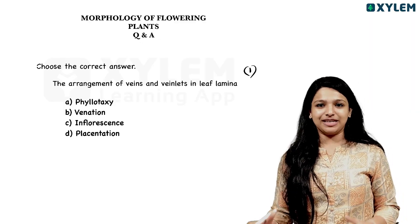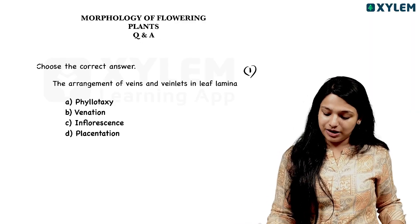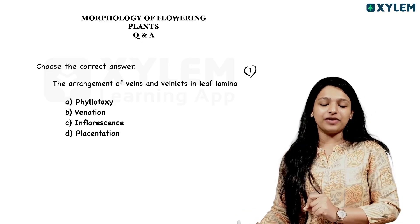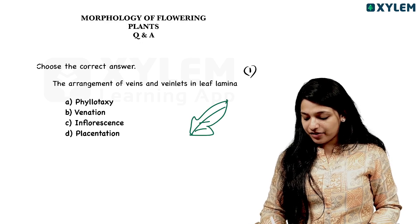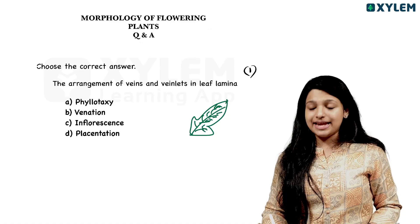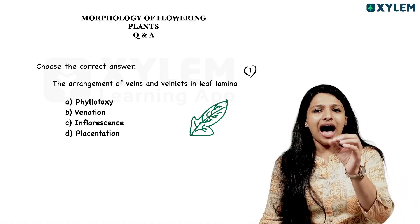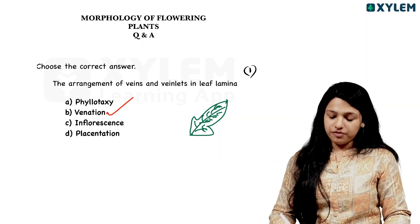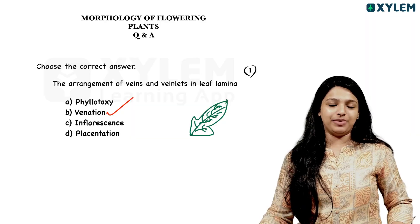Morphology of Flowering Plants. First question, one mark MCQ: What is the arrangement of veins and veinlets in a leaf? The arrangement of veins in a leaf is called Venation. The arrangement of veins and veinlets on a leaf lamina is Venation.